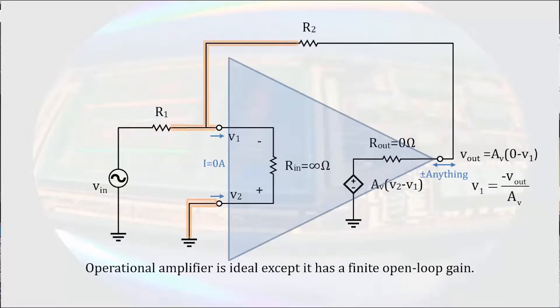we can write the voltage of the inverting terminal in terms of the output voltage and the open-loop gain of the amplifier. So with V1 being equal to negative Vout over the open-loop gain, we can define currents and write a node equation at the inverting terminal.